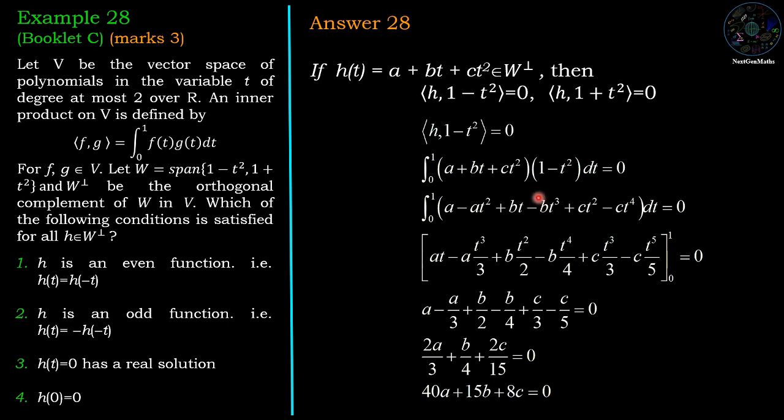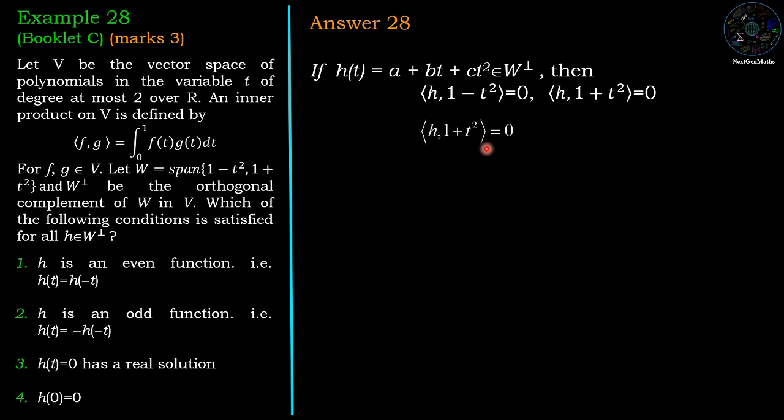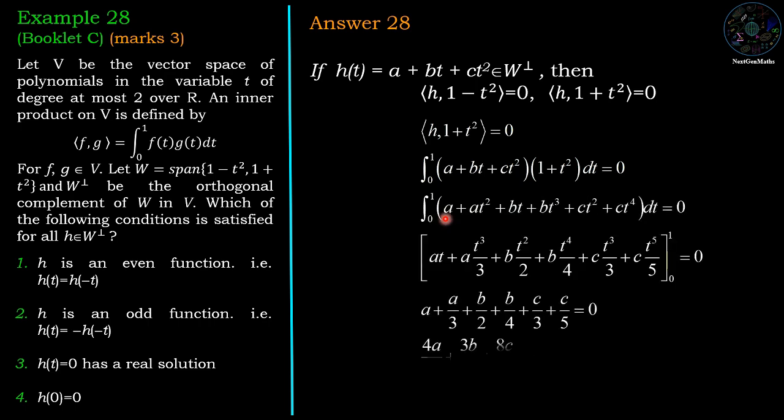Now we have another condition: h inner product 1 plus t squared equals 0. And we apply the definition, then we have the second equation. After the integration, 80a plus 45b plus 32c equal to 0.